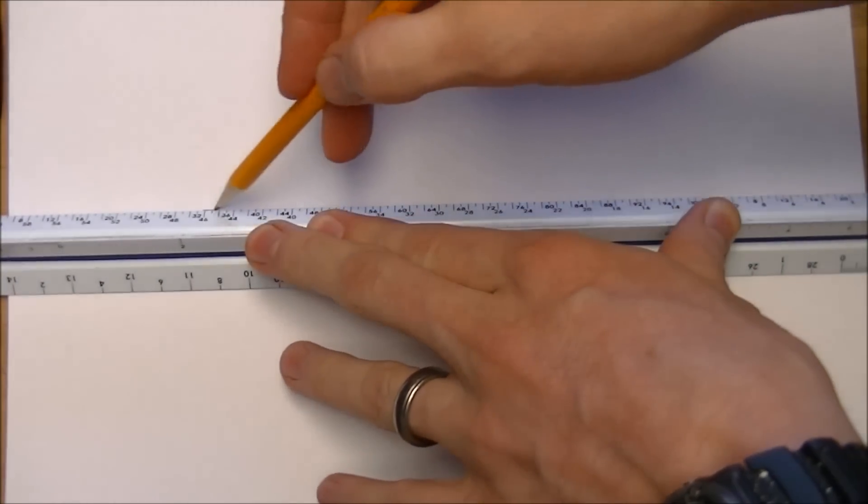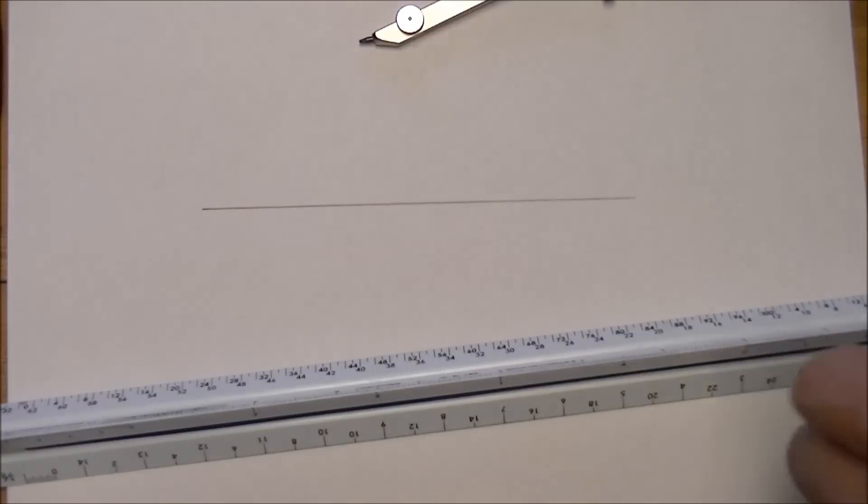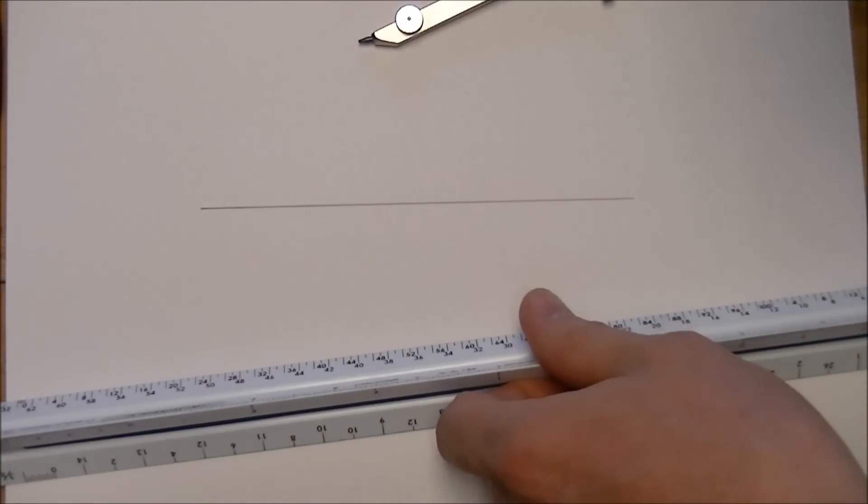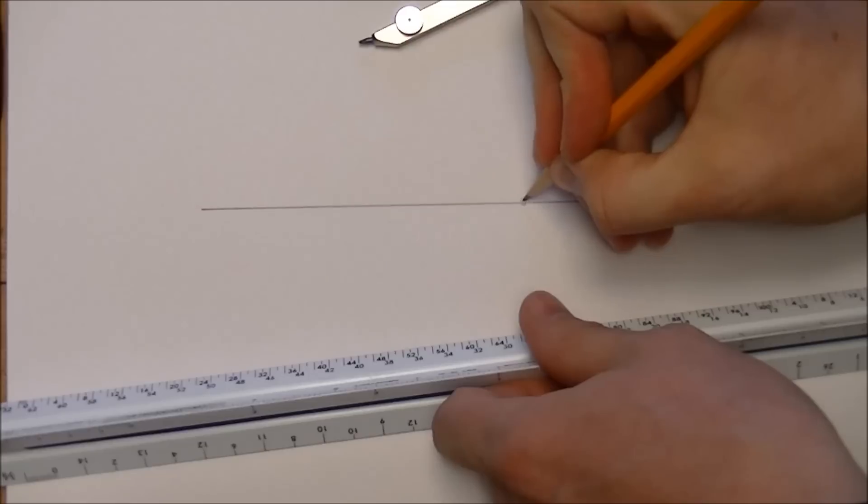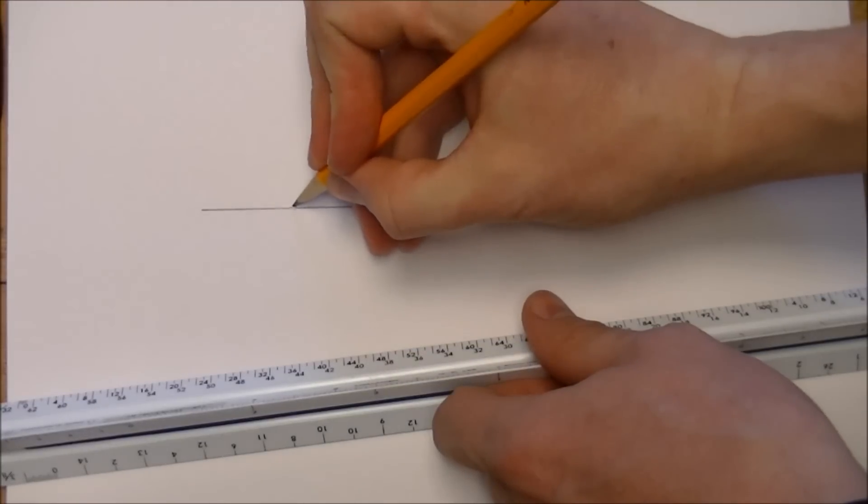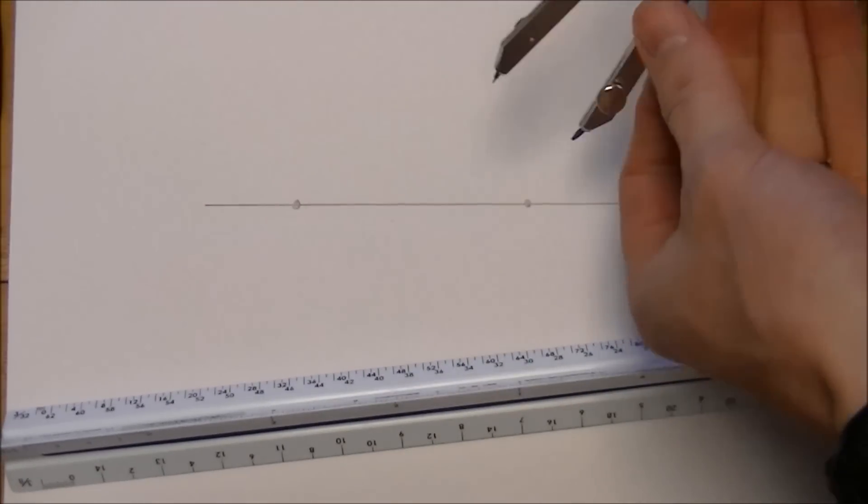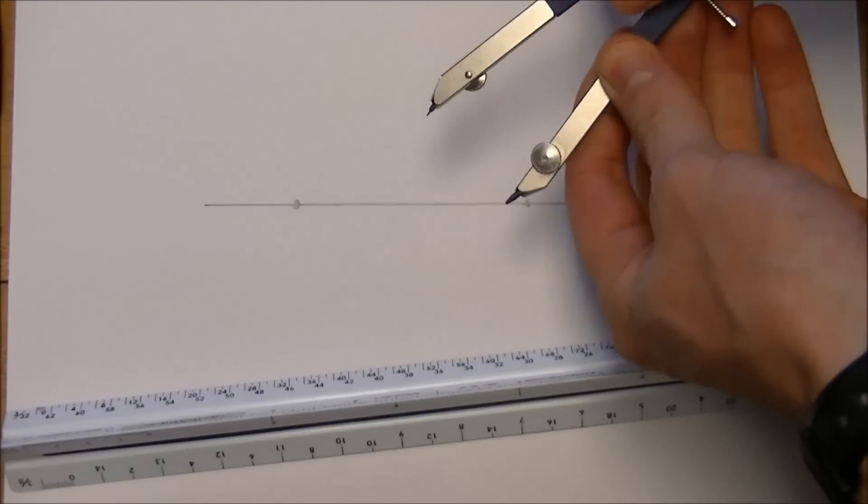The way we're going to do it, we'll start off with a single line. On that line, we'll put two points, and we're going to construct a perpendicular line.